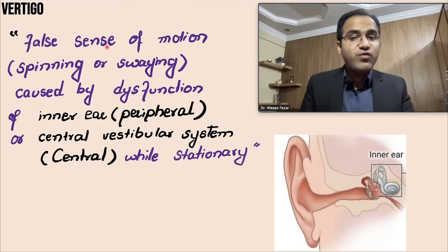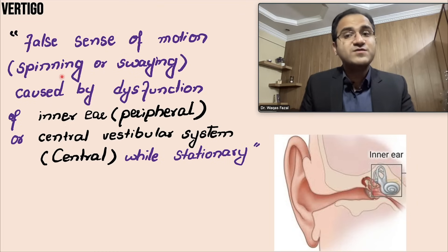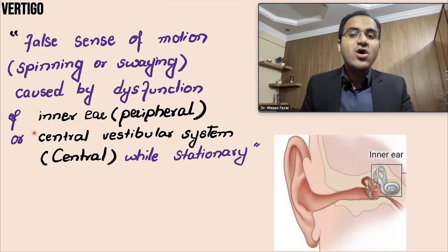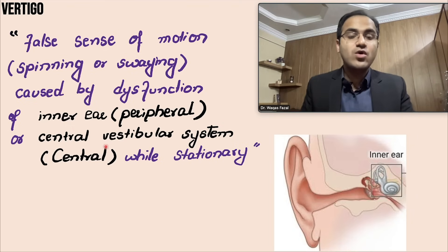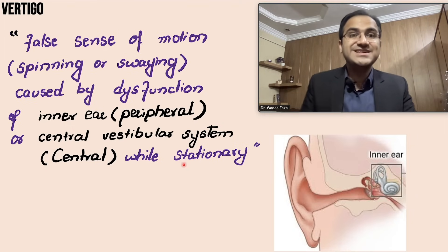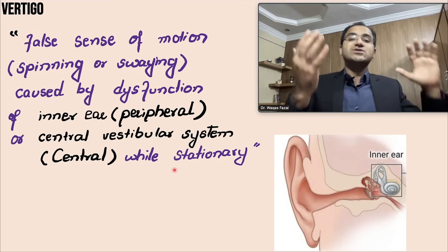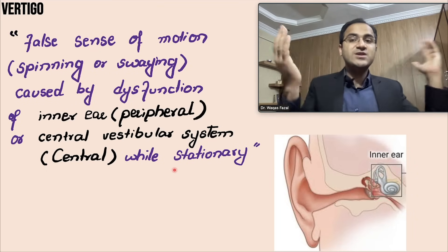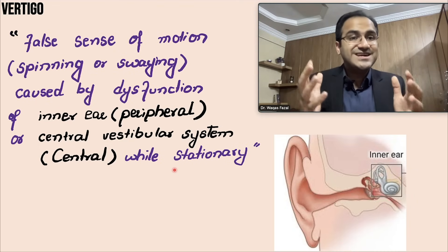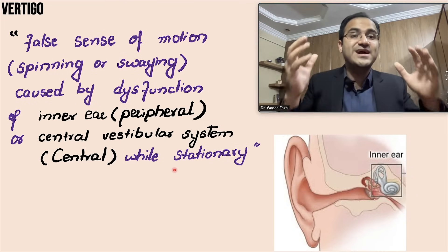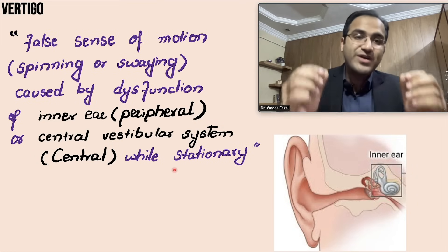Vertigo is basically a false sensation of motion — a false sensation of spinning or swaying — caused by dysfunction of either the inner ear, which is called peripheral vertigo, or the central vestibular system, which is called central vertigo. The patient is at rest and thinks that the surrounding is moving. That false sense of spinning and swaying is called vertigo.